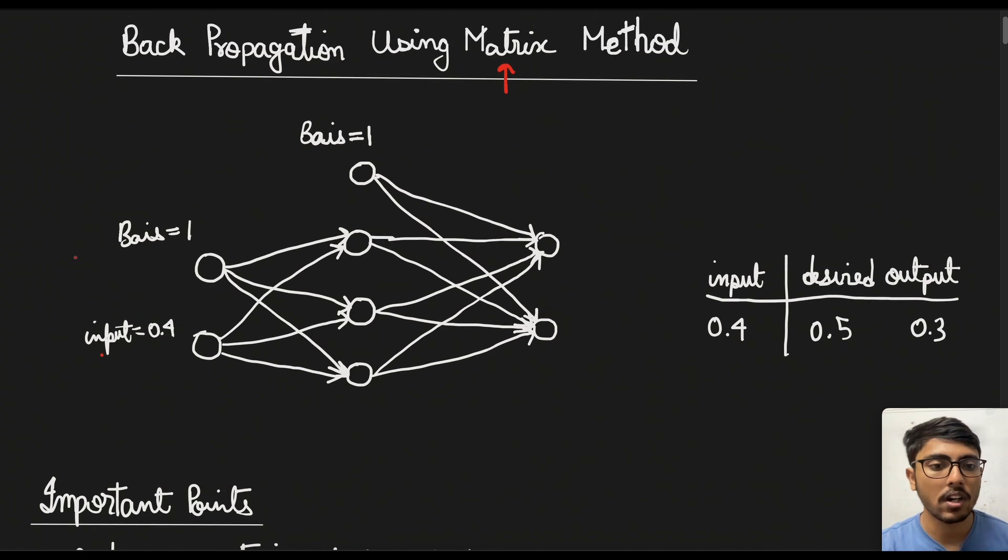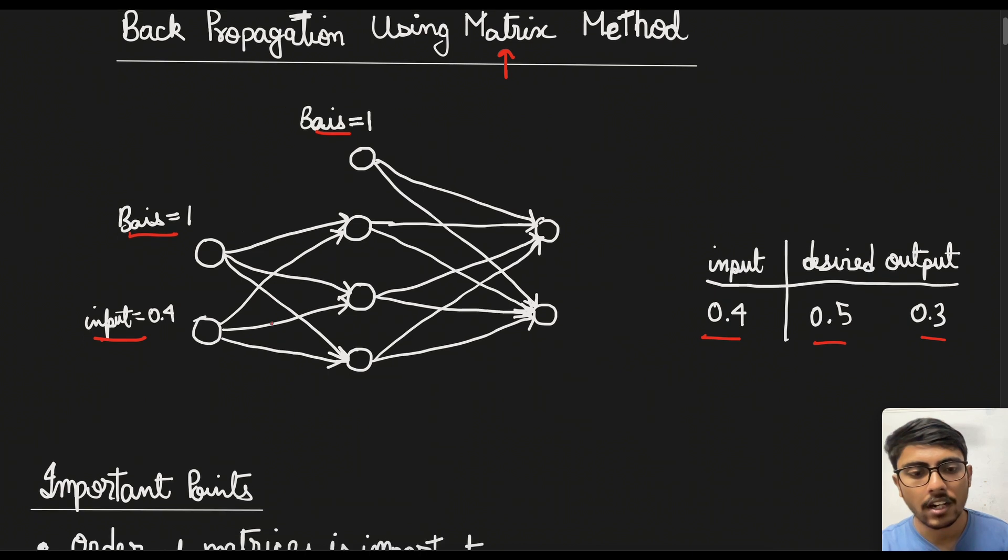So we are given a neural network with the input 0.4 and the bias for the input layer is 1 and for the hidden layer also the bias is 1. So we are given this table where input 0.4 and the desired output is 0.5 and 0.3.